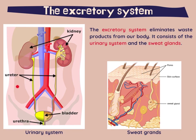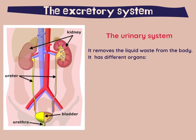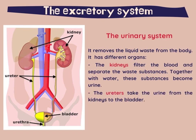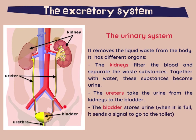Here we can see a picture of the urinary system, and on the right, a picture of the sweat glands. The urinary system removes the liquid waste from the body. It has different organs. The kidneys filter the blood and separate the waste substances. Together with water, these substances become urine. The ureters take the urine from the kidneys to the bladder — they are thin tubes that carry the urine. Then, when it is full, it sends a signal to go to the toilet. And at last, the urethra takes the urine out of the body.